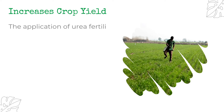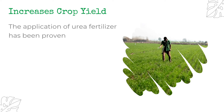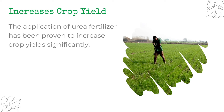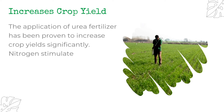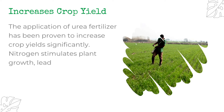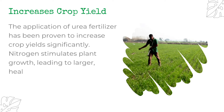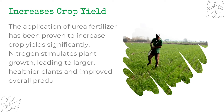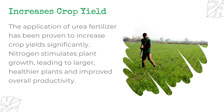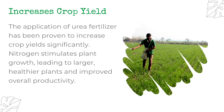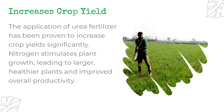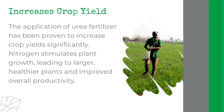Increases crop yield: The application of urea fertilizer has been proven to increase crop yield significantly. Nitrogen stimulates plant growth, leading to larger, healthier plants and improved overall productivity.